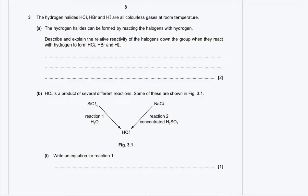Question number 3. The hydrogen halides HCl, HBr, and HI are all colorless gases at room temperature. Part A: describe and explain the relative reactivity of the halogens down group 7 when reacting with hydrogen. Reactions down group 7 are less vigorous due to decreased electronegativity. As atomic size increases down the group, the attraction for electrons is less, giving a lower probability of electron addition to the halide ion.